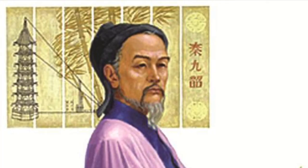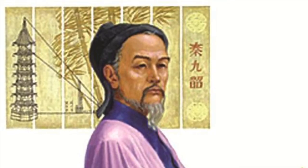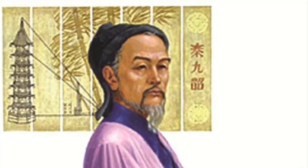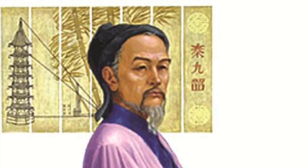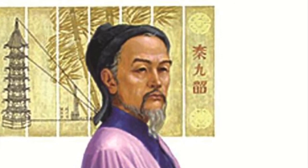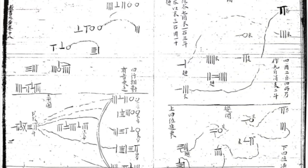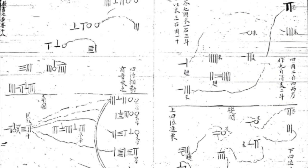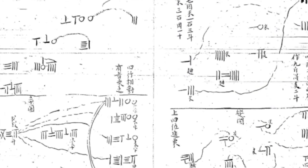Next we will talk about another Chinese mathematician who made major mathematical advances: Qin Jiushao. He wrote his famous mathematical treatise, the Shushu Jiuzhang, or the Mathematical Treatise in Nine Sections, which appeared in the year 1247. He was the first of the great 13th century Chinese mathematicians, a period of major progress during which mathematics reached new heights.